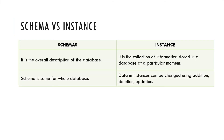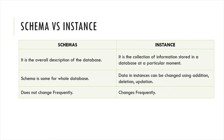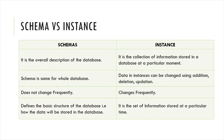Schema is the same for all instances of a database. The instance can be changed using addition, deletion, and updation. Schema does not change frequently — the overall design of the database is not frequently changed. Schema defines the basic structure of the database, while an instance is the set of information stored at a particular time.